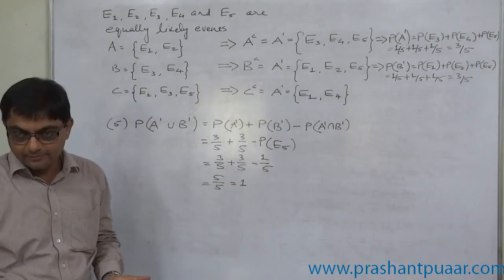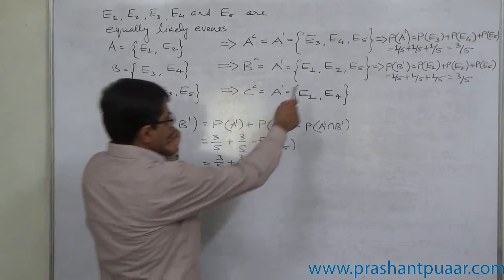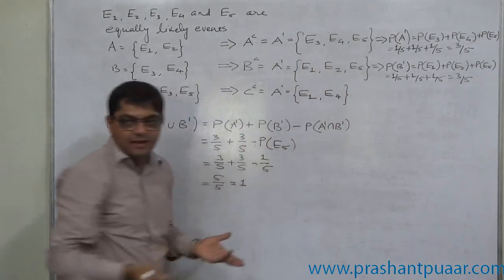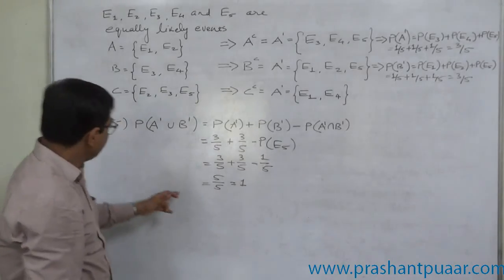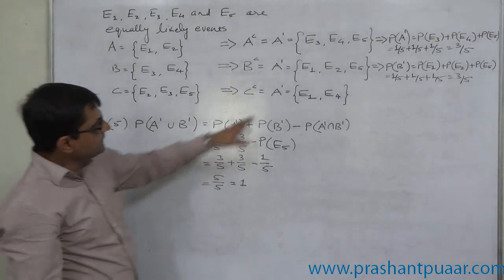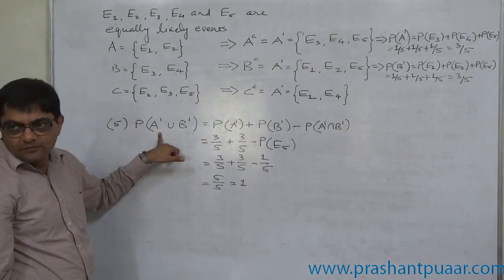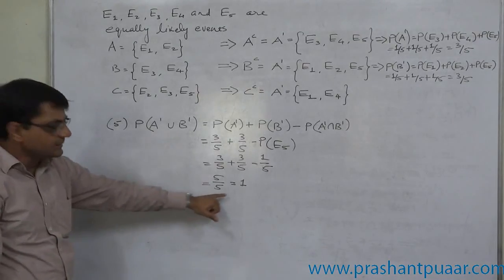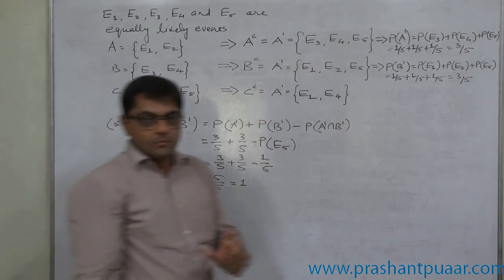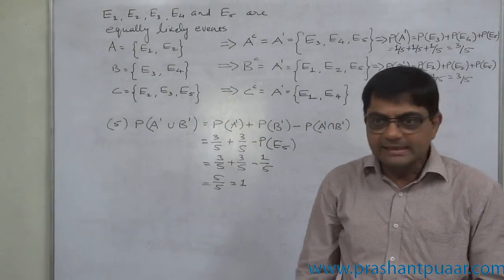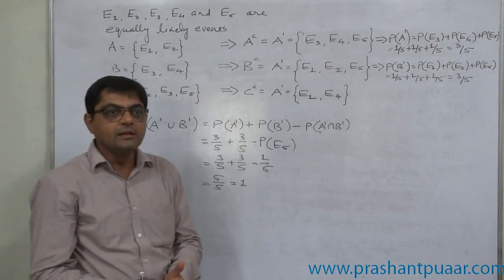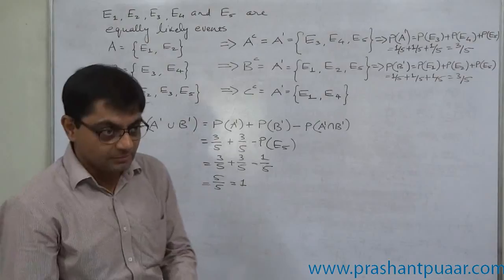1 means certainty. How is it possible? Check the list: E1, E2, E3, E4 and E5 — all 5 possible events are there in the case of A complement union B complement. That means anything out of these 5 that happens, it is one of the cases of A complement union B complement. That is why it is 1; this is the case of certainty. If the probability of any event is 1, that means it is going to happen. If the probability of any event is 0, that means the event is impossible.